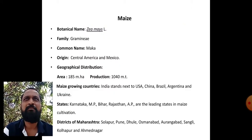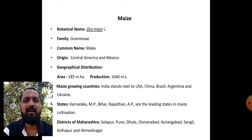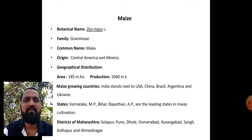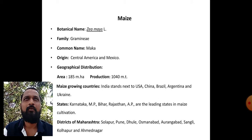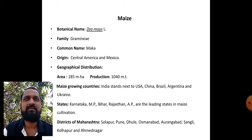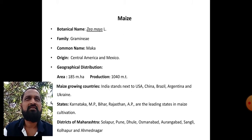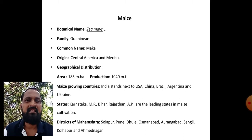The botanical name of maize is Zea mays, which comes under the family Gramineae, also known as Poaceae. Commonly, maize is known as Makka or Maize. This maize crop originated from Central America and Mexico.